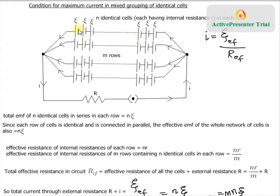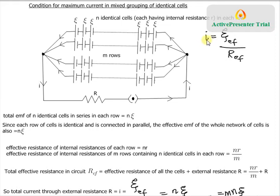So you will have m rows of n cells in series, connected in parallel. For such a collection of cells, we are going to find when the current through the external resistance R will be maximum. To do that, we will use Ohm's law for the entire circuit: I equals effective EMF divided by effective resistance. Our goal is to find when this current I is maximum.